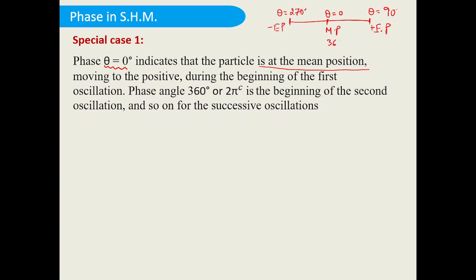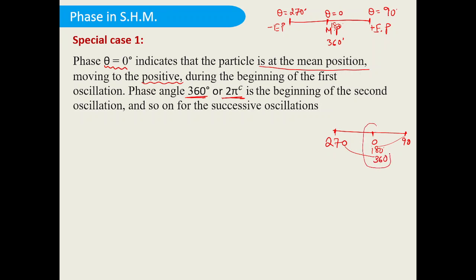So the cycle goes: 0°, 90°, 180°, 270°, 360°. Starting from 0, the particle moves to positive extreme (90°), then back through mean (180°), to negative extreme (270°), and back to mean completing one full oscillation at 360°. At the beginning of the second oscillation the phase is 360° (or 2π), not 0° again.